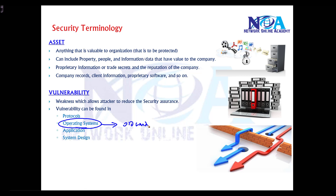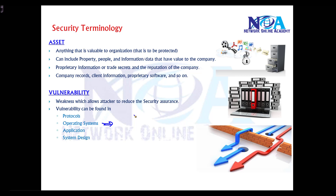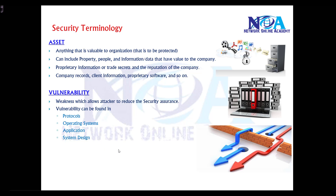Vulnerabilities can also exist in your operating system — for example, if you're using an old Windows OS that has known issues and you don't have updated security patches installed. An attacker who identifies the OS and its specific vulnerabilities can use them to introduce attacks. Similarly, applications or poor network design that doesn't account for security implications can also lead to attacks.